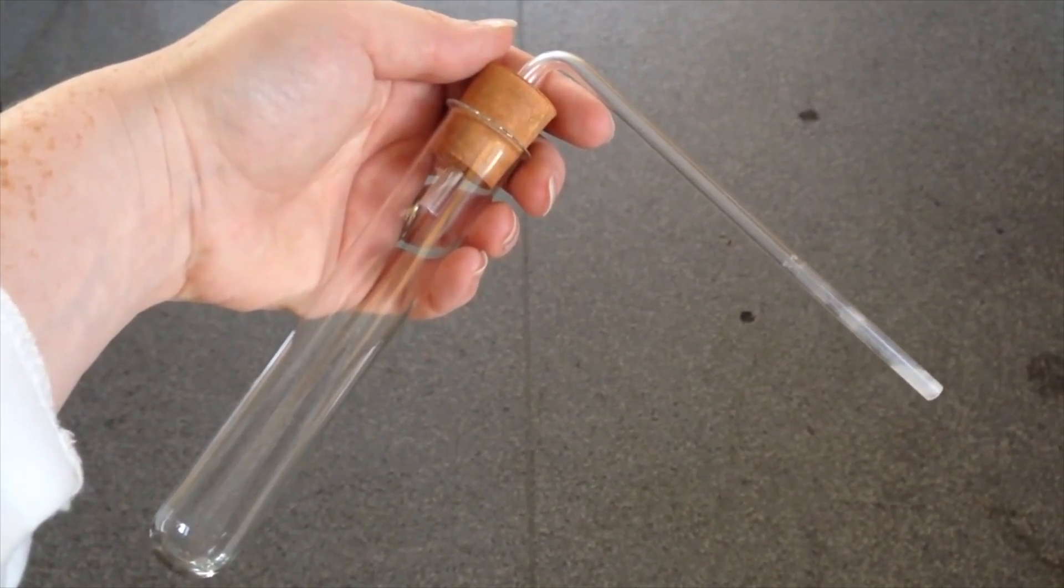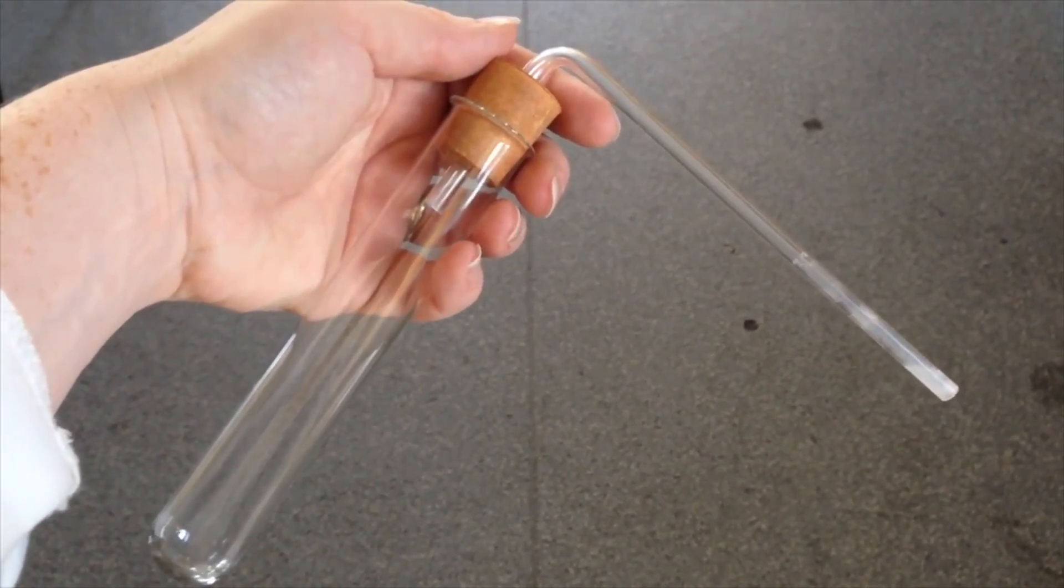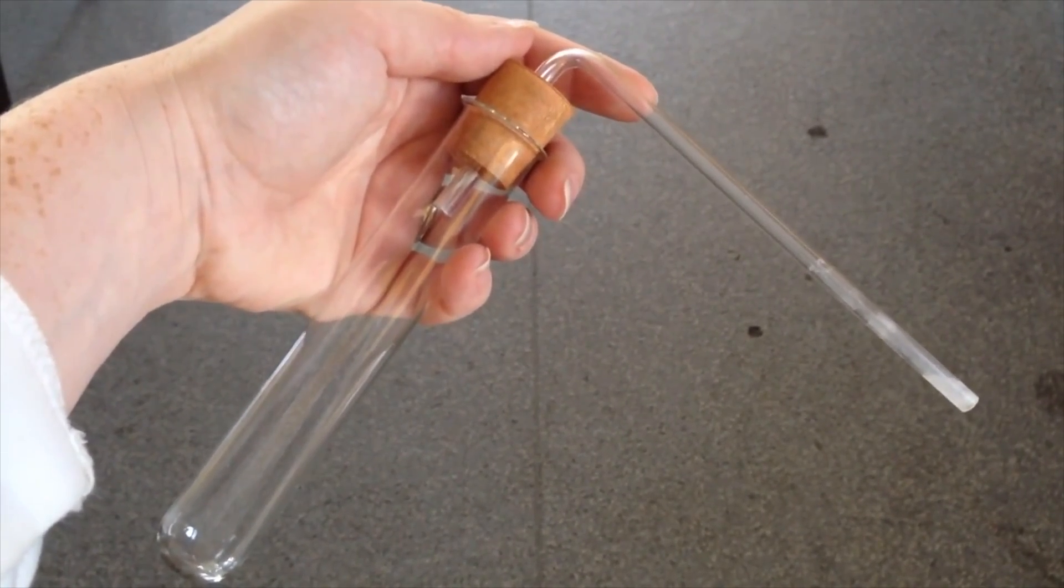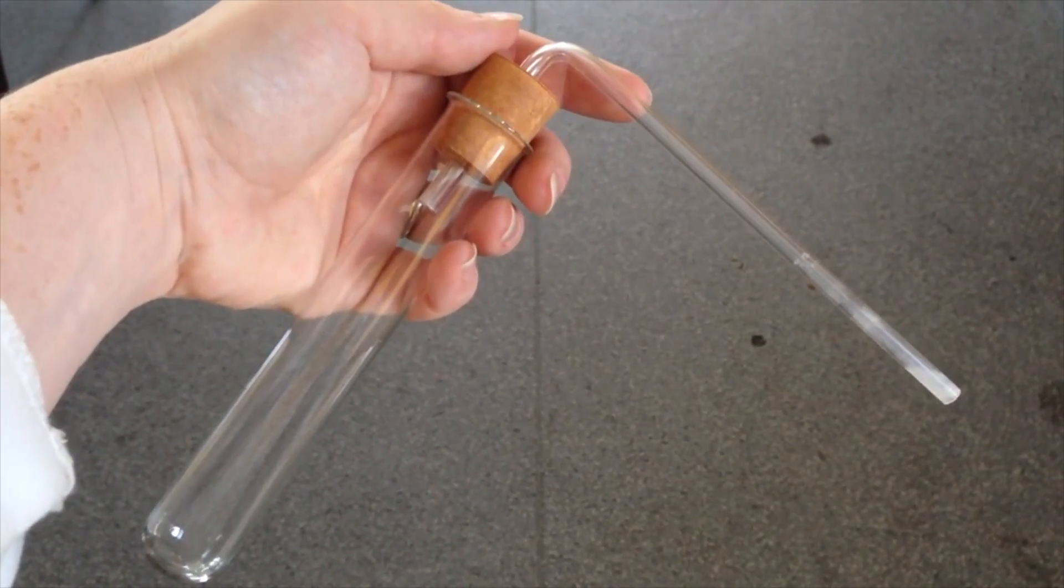So if your school doesn't have all the fancy quick fit glassware, you may have just used a boiling tube with a delivery tube which will connect to the condenser and send that into a test tube.